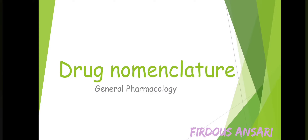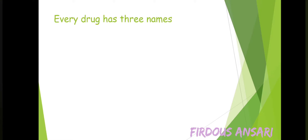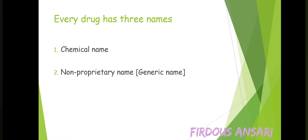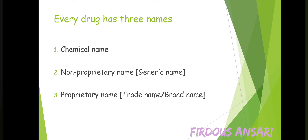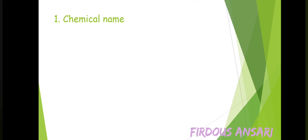Hello to all dear students. In this video, we will be discussing about drug nomenclature. Every drug has three names: first, the chemical name; secondly, the non-proprietary name, also known as the generic name; and lastly, the proprietary name, also known as the trade name or brand name.